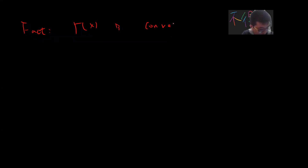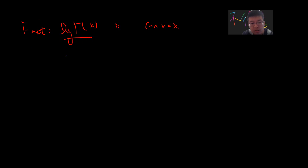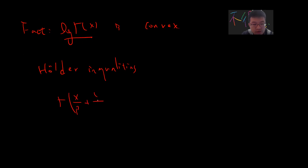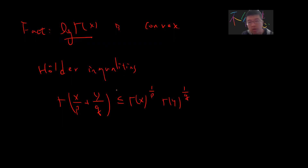There is a fact that log gamma(x) is convex. The reason is that you can use Hölder's inequality. You can easily check this. I will not prove this here, because I will use the Bohr-Mollerup theorem to prove this.